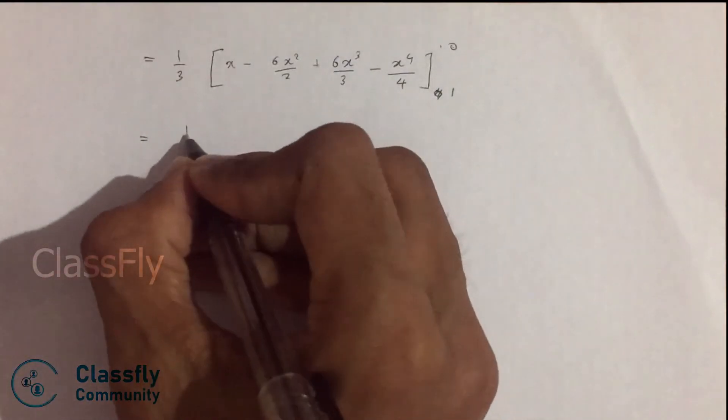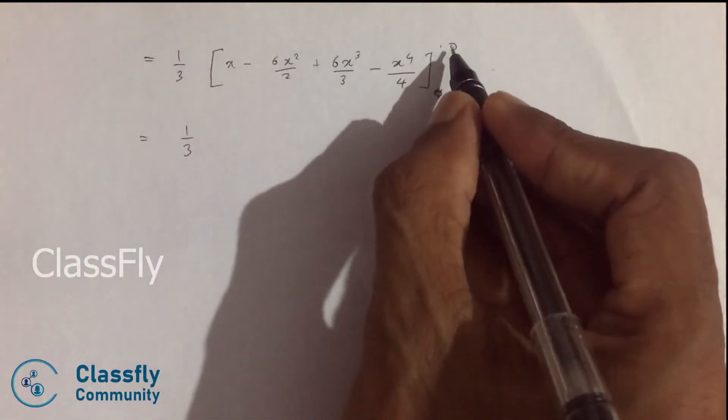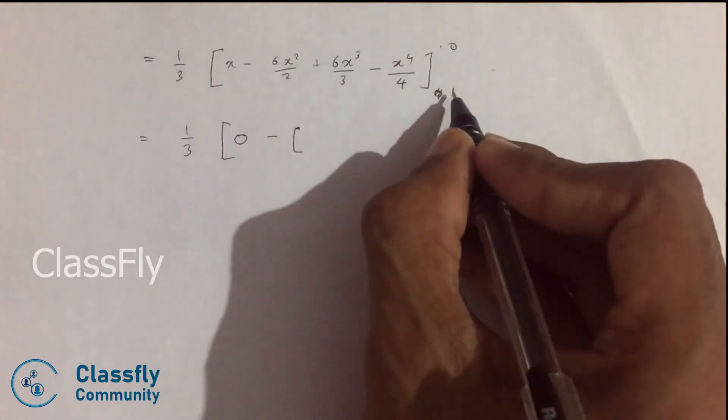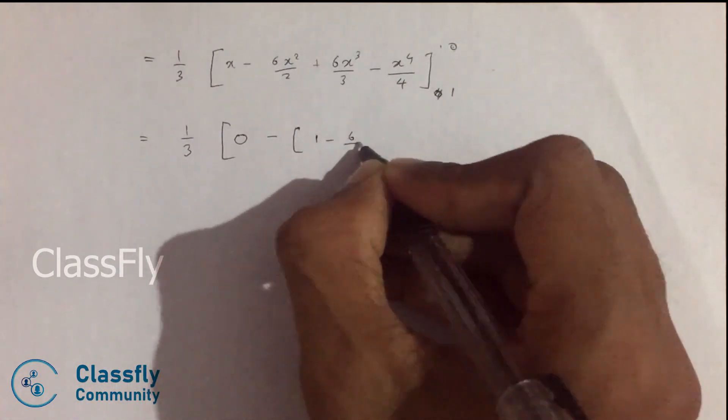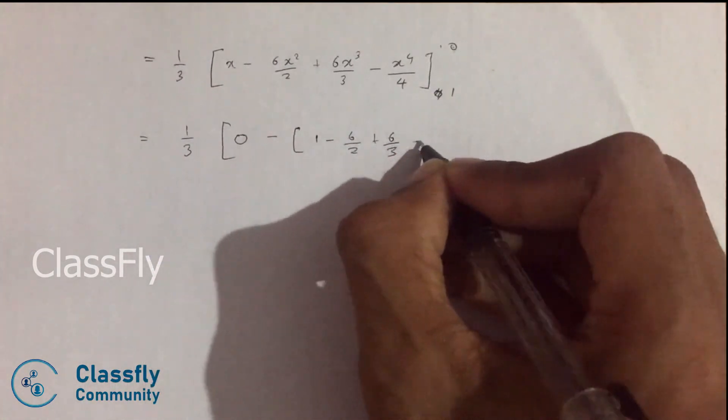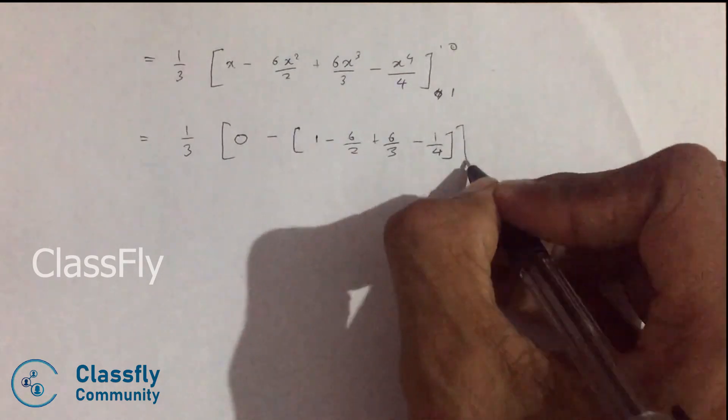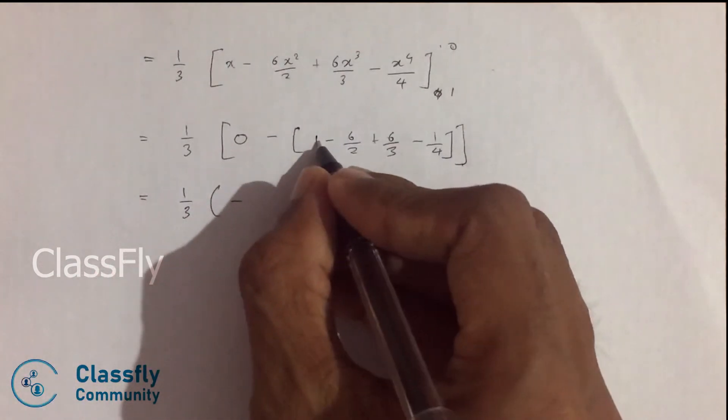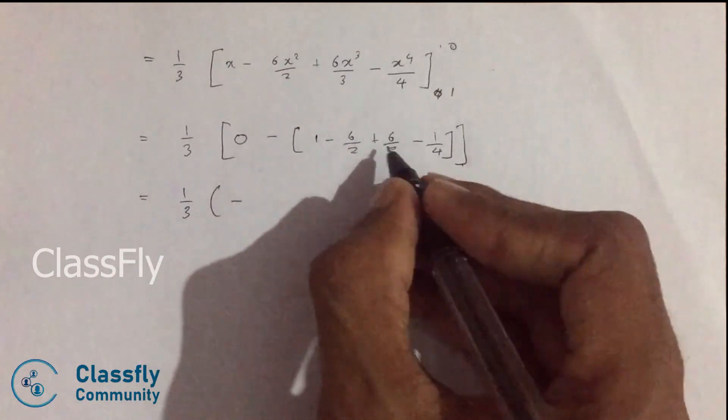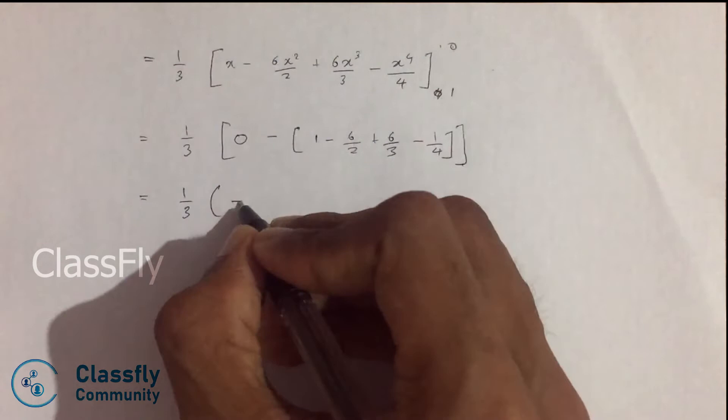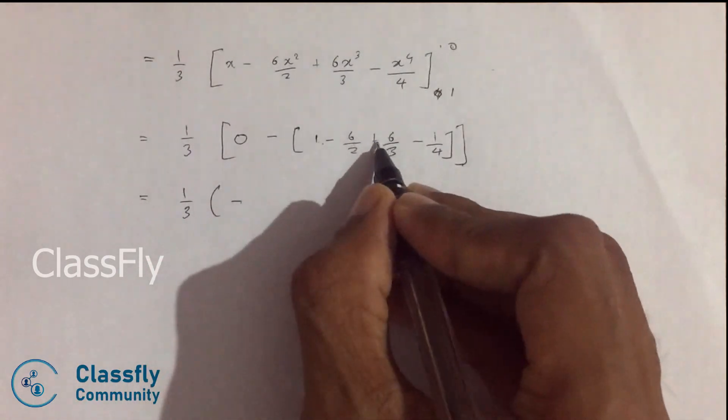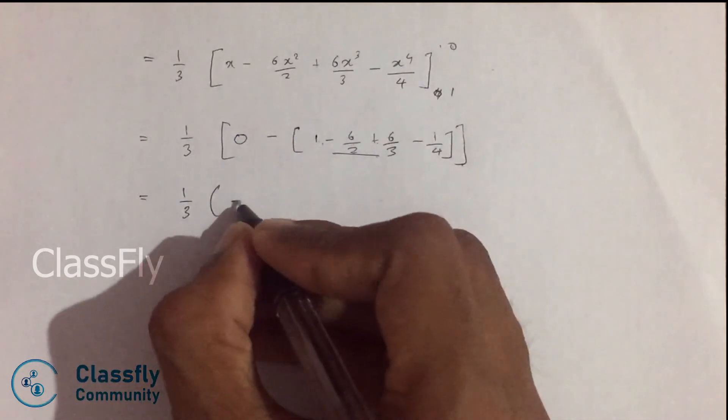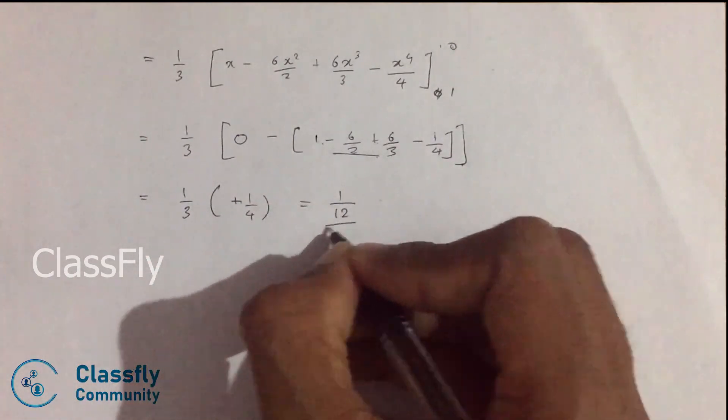And applying 0, we get 0 minus 0. And applying the limit 1: 1 minus 6 divided by 2 plus 6 divided by 3 minus 1 divided by 4, which is equal to 1 divided by 3 times minus of (1 minus 3 plus 2) minus 1 by 4, which is 1 by 4, equals 1 divided by 12.